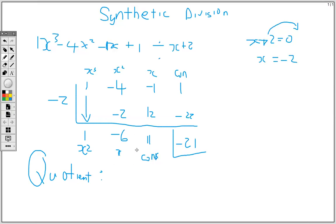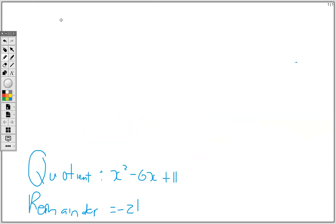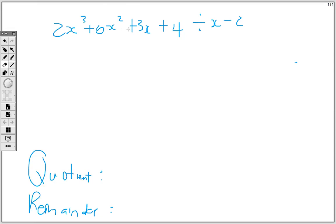All of this represents the quotient, while the last part is our remainder. The last number is always the remainder — so the remainder here is negative 21. The quotient is 1x squared, which is the same as x squared minus 6x plus 11.